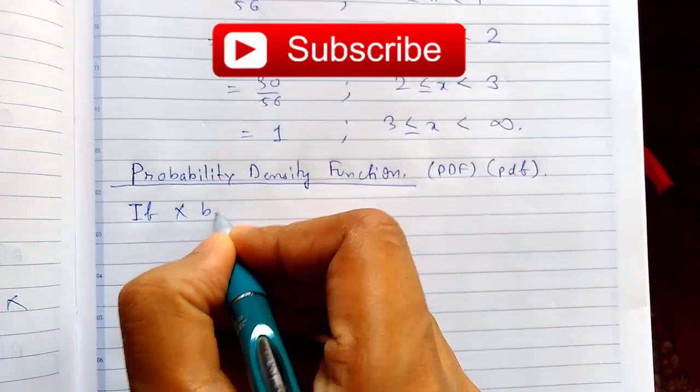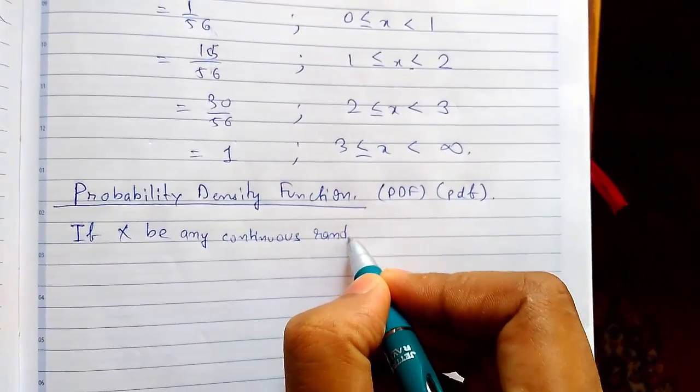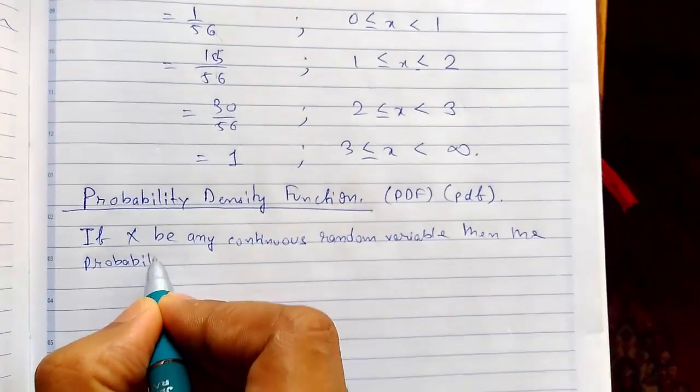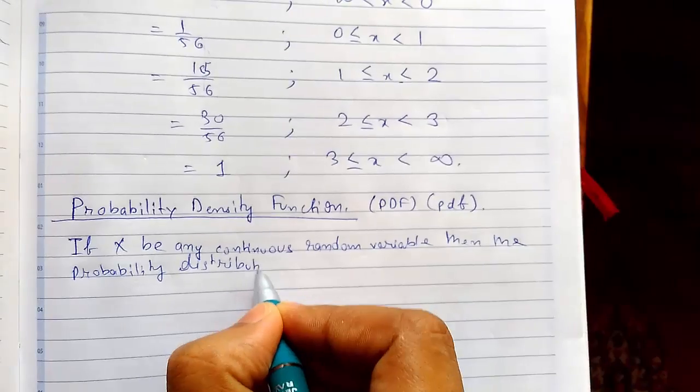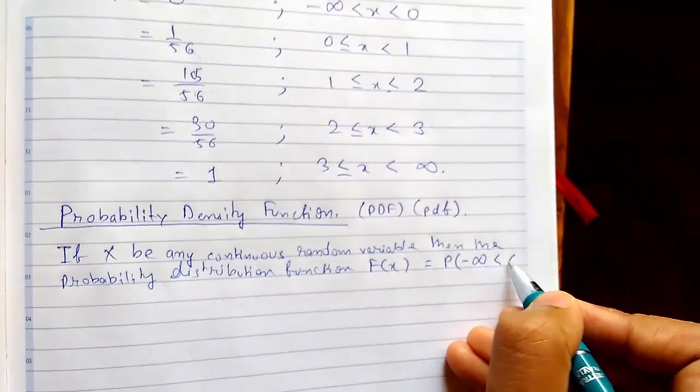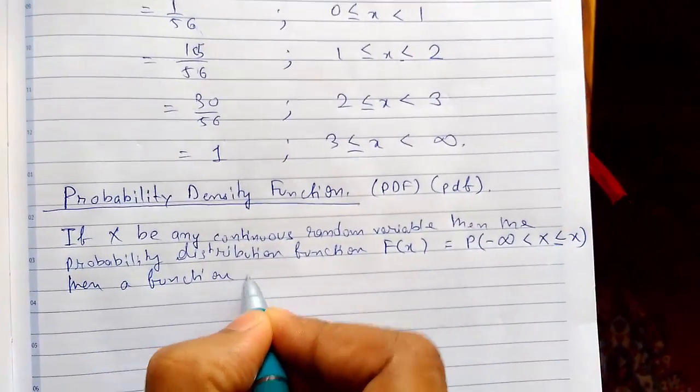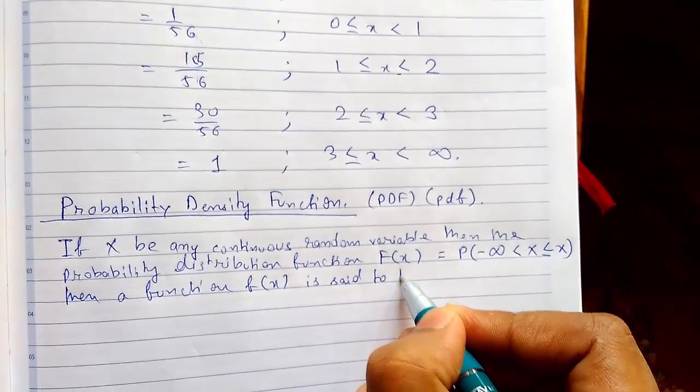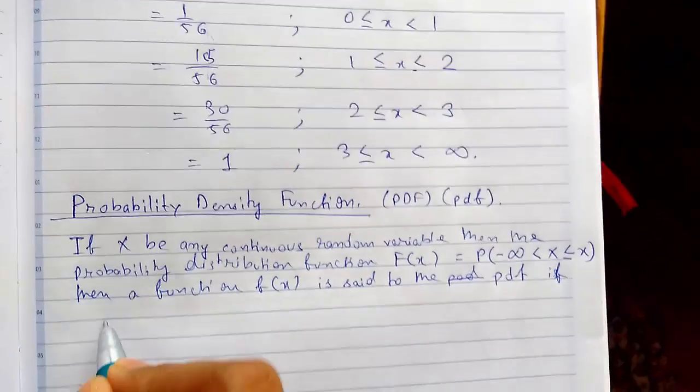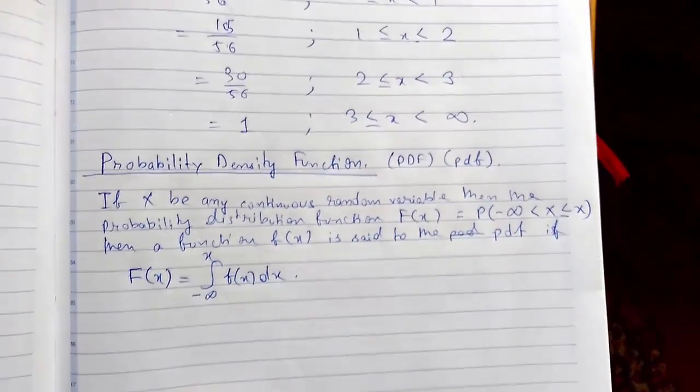So let me write it. If x be any continuous random variable then the probability distribution function, that is capital F of x, it lies between this probability. Then a function f of x is said to be the PDF, that is probability density function, if this is a condition: F of x equals the integral from negative infinity to x of f of x dx. So this is a probability density function.